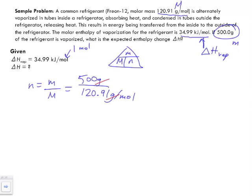So grams are going to cancel out, and when we divide these two together we're going to get a number of moles as follows: 4.35 moles.